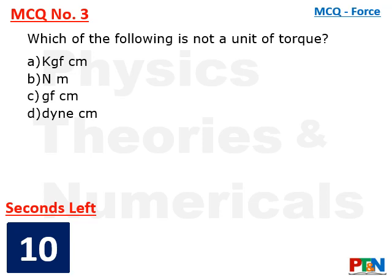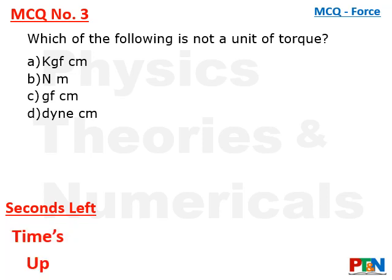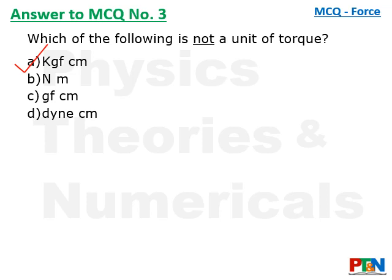The next MCQ: which of the following is not a unit of torque? You have 10 seconds to get your option. Time is up — the answer is KGF centimeter. In KGF centimeter, it is basically SI and CGS units mixed together. The others in the list are valid units of torque.